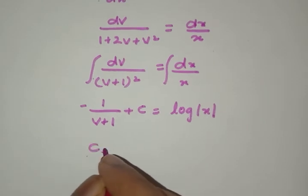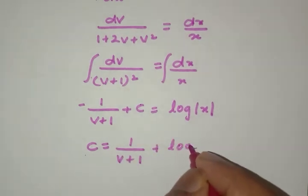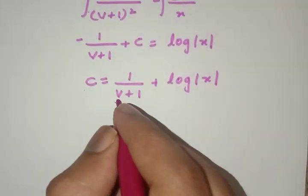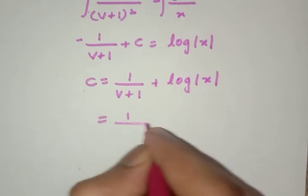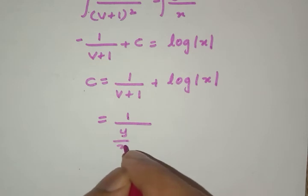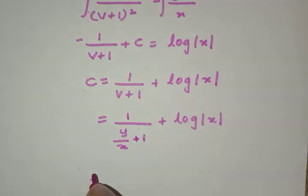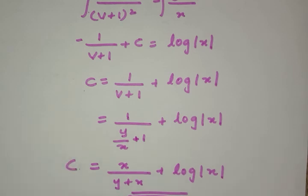So we get the value of c as 1/(v + 1) + log|x|. We know that the value of v is y/x, so we'll put that: 1/(y/x + 1) + log|x|. This is equal to x/(y + x) + log|x|, so this is our final answer for this equation.